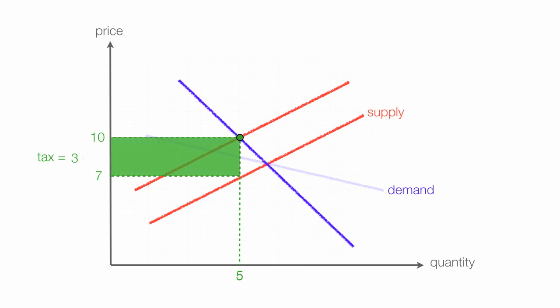Total revenues is that green rectangle, and it's 3. The tax of 3 times a quantity of 5 for a total of 15. So total tax revenues are 15.